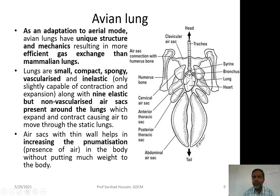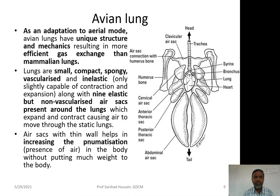For example, the clavicular air sac is continuous with the air sac of the humerus bone. This air cavity inside the bone is to lighten the weight of the bird — all of this is adaptation for flight. Air sacs with thin walls increase pneumatization, enabling very efficient respiration without adding much weight. If the lungs were large and spongy, the increased weight would have made flight difficult, so lung size is reduced and thin-walled air sacs are developed instead.